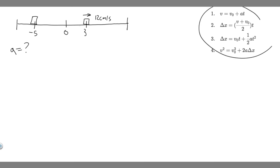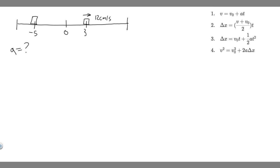These right here are the kinematic equations. In kinematic equations, there are five different variables. The first step whenever you solve a problem like these is to write down all the variables and see whether or not you're given them. The variables are: delta x, v sub 0, v, a, and t.